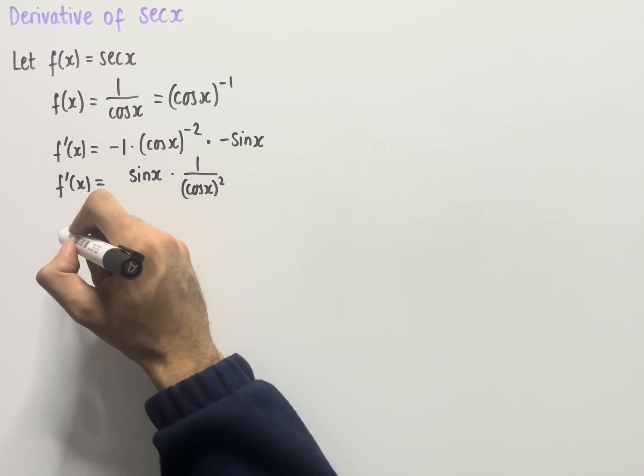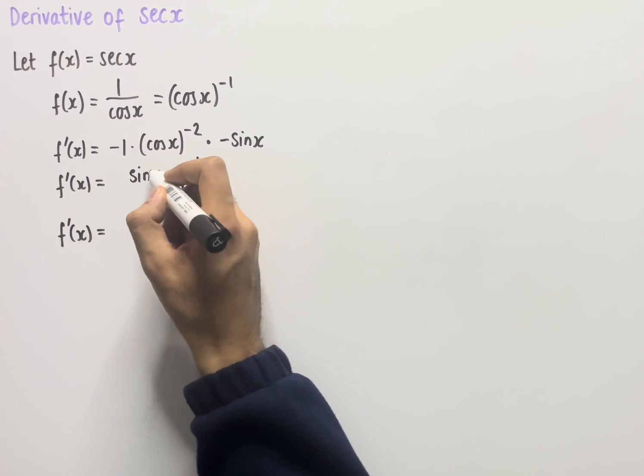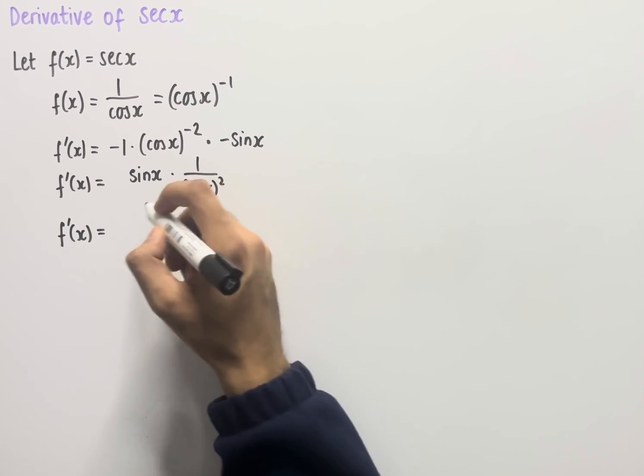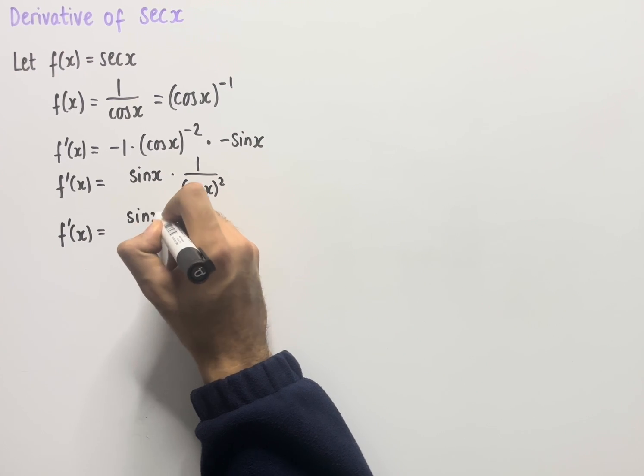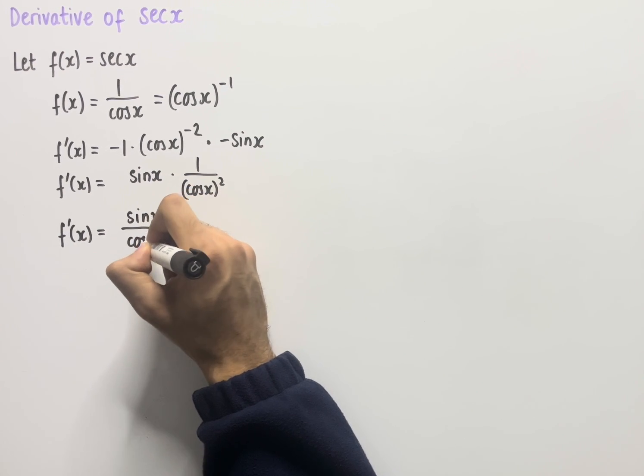If we now simplify this, we get f'(x) which equals sin x times 1 over (cos x) squared, which is just sin x over cos²x.